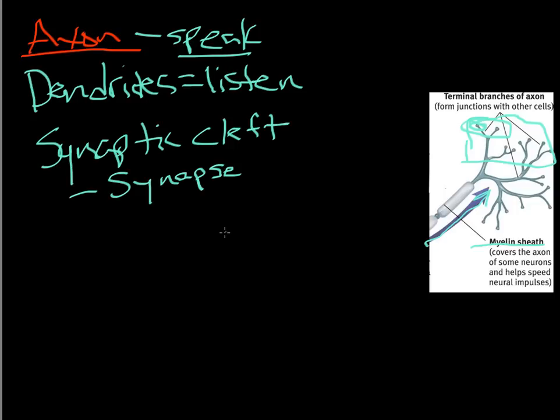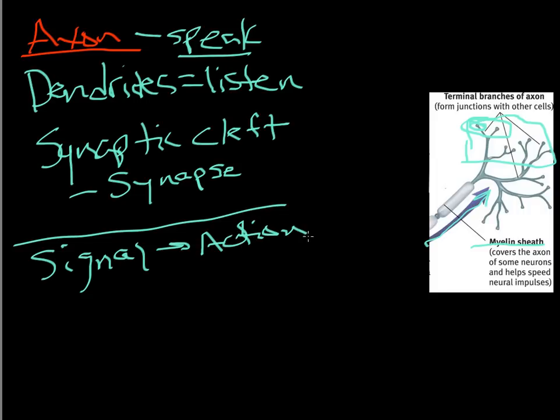Now, let me unpack for you for a minute just exactly how this, how the signal actually transpires. How does it run along the actual axon itself? And it's something that we refer to as an action potential. And that's what I want to explain to you in this next illustration.